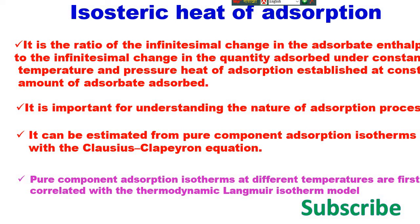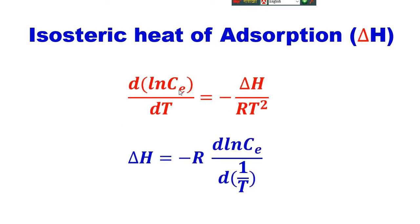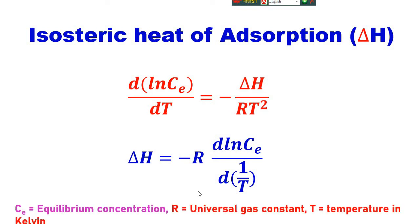That is, pure component adsorption isotherms at different temperatures are first correlated with the Langmuir isotherm model, and the Clausius-Clapeyron equation can be written as: d(ln Ce)/dT = −ΔH_st / RT², or ΔH_st = −R · d(ln Ce) / d(1/T), where Ce is the equilibrium concentration, R is the universal gas constant, T is the temperature in Kelvin, and ΔH_st is the isosteric heat of adsorption.